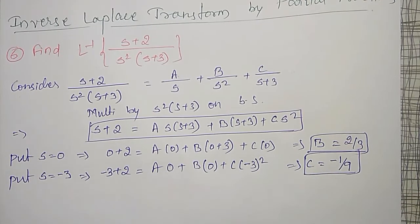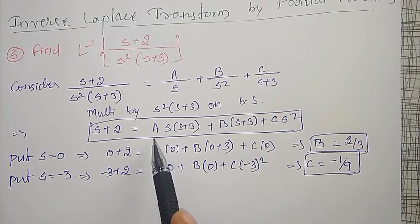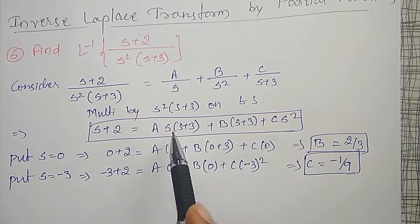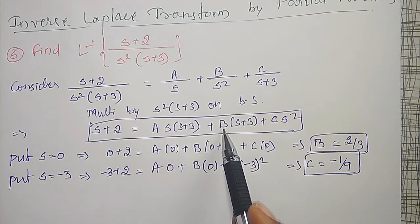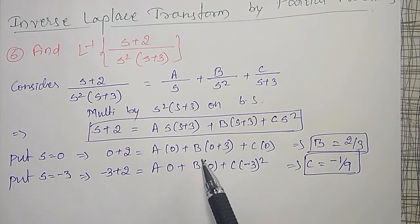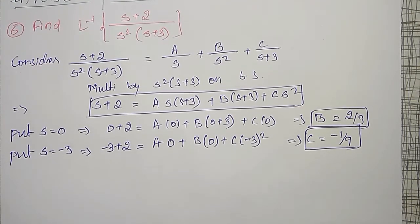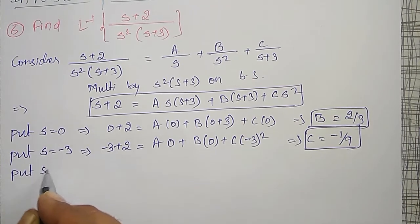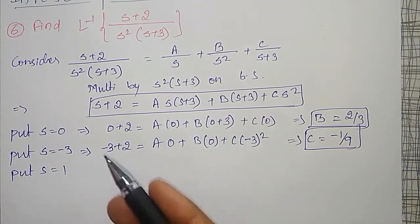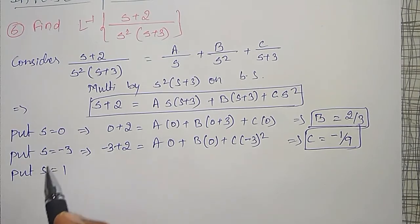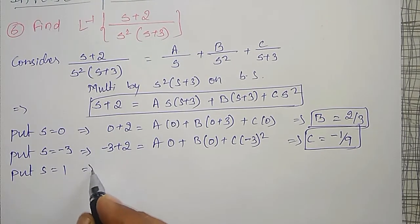Now I have to find the value of A. I cannot substitute s=0 or s=−3 again since B and C are already calculated from those. Let me put s equal to some other value — or I can compare coefficients. I will put s=1, other than the values 0 and −3, so the terms do not become zero.